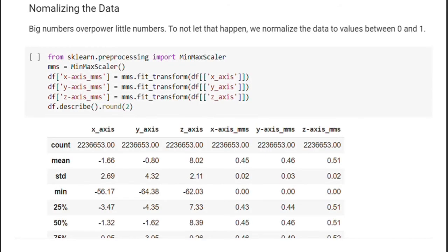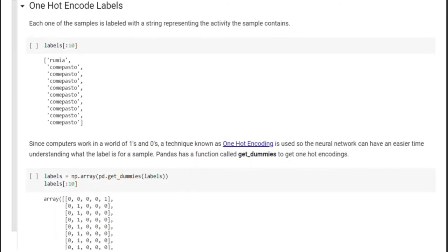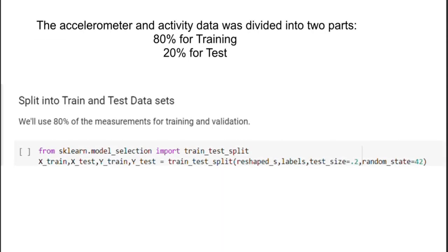Big numbers overpower little numbers. To not let that happen, we normalize the data to values between zero and one. Since computers work in a world of ones and zeros, a technique known as one-hot encoding is used. The pandas library has a function called get_dummies to get one-hot encoding. The accelerometer and activity data were divided into two parts: 80% for training and 20% for test.